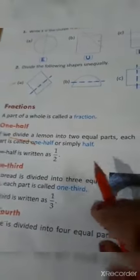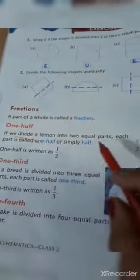Next is here. Fraction is, a part of a whole is called a fraction. One half, when we divide a lemon into two equal parts, each part is called one half or simply half. One half, second half.